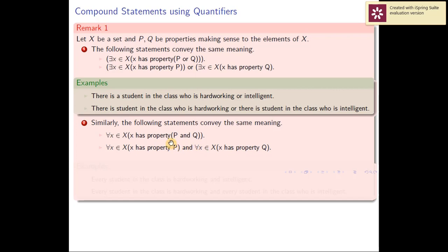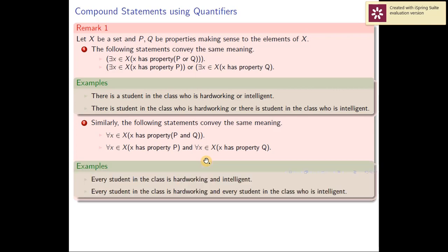Similarly, 'For every x in X, x has property P and Q' conveys the same meaning as 'For every x in X, x has property P, and for every x in X, x has property Q.' Example: 'Every student in the class is hardworking and intelligent' means the same as 'Every student in the class is hardworking and every student in the class is intelligent.'